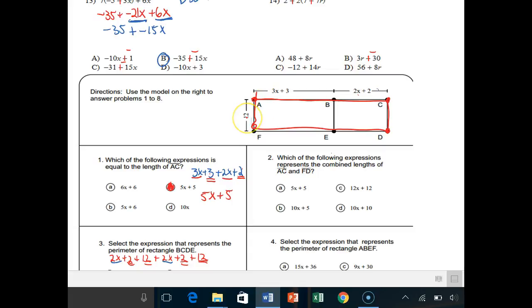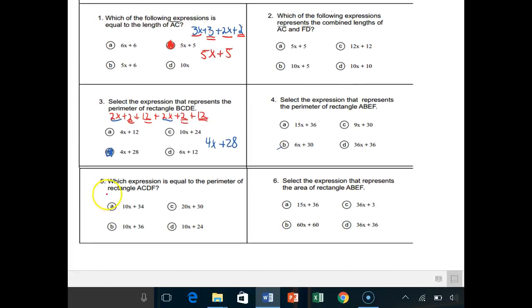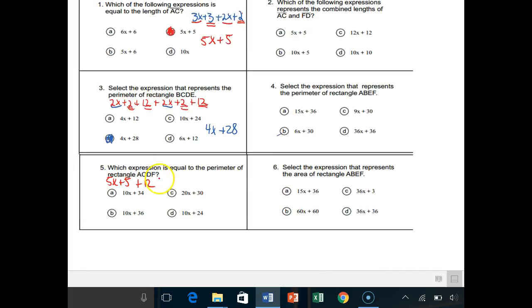We already solved in question number one what the length of A to C was, 5x plus 5. This whole thing, when we combine like terms, is 5x plus 5. So what's that mean for the bottom? This whole thing from F to D is also going to be 5x plus 5. This whole side is 12, so the other side has got to be 12. It's just a fancy way for saying find me the perimeter of that shape. We have 5x plus 5 on top, plus 12 on the right-hand side. And the bottom, 5x plus 5, and we're going to add the 12.